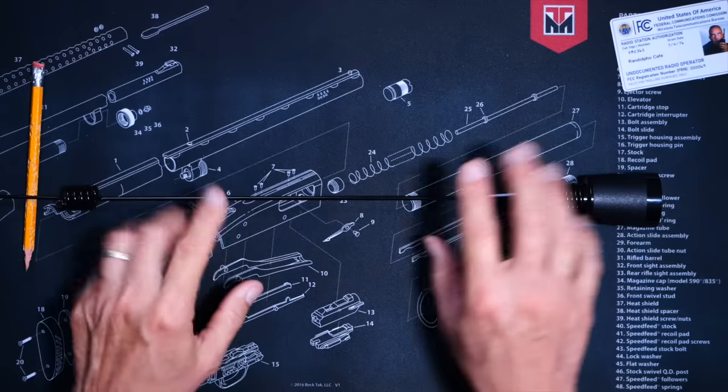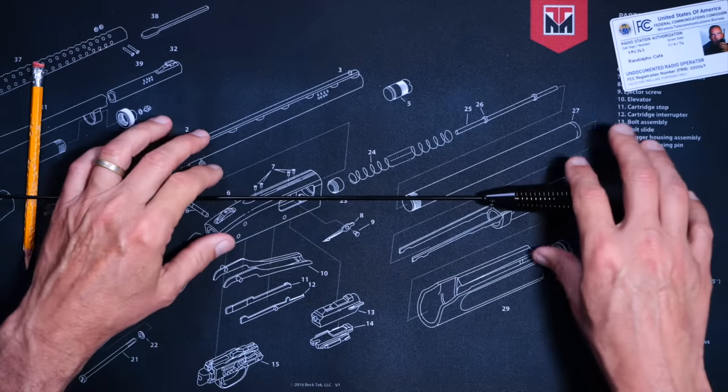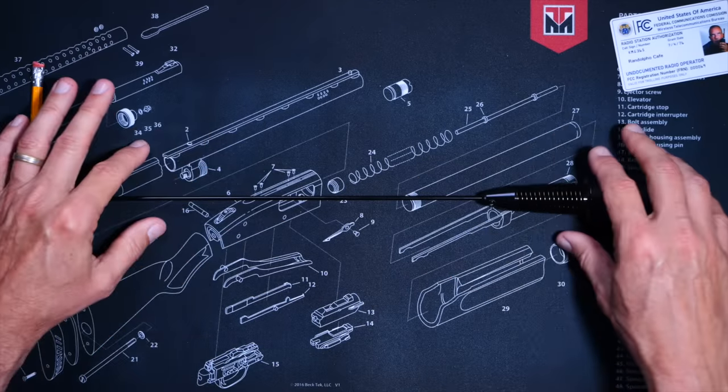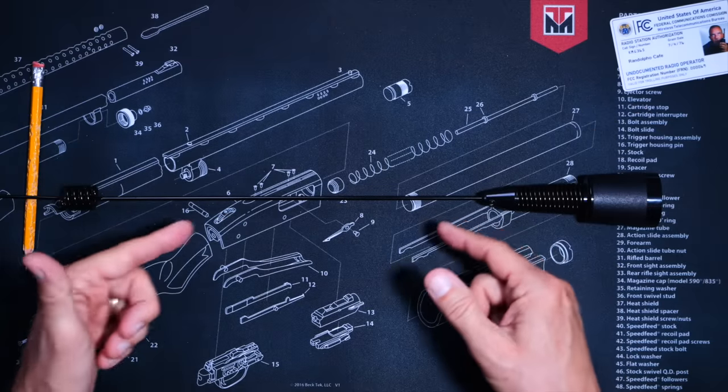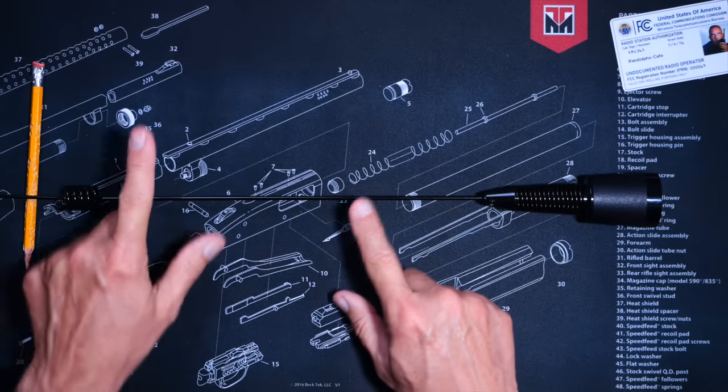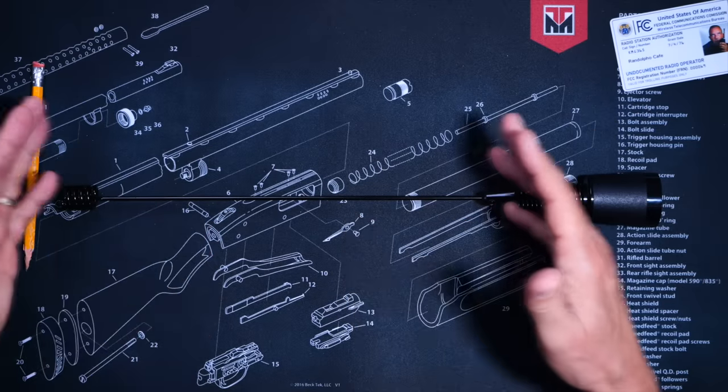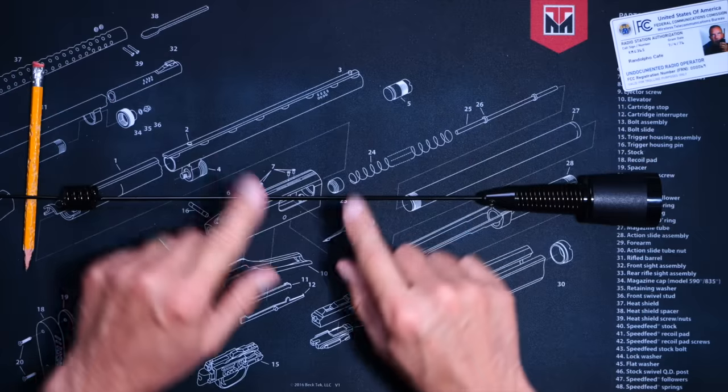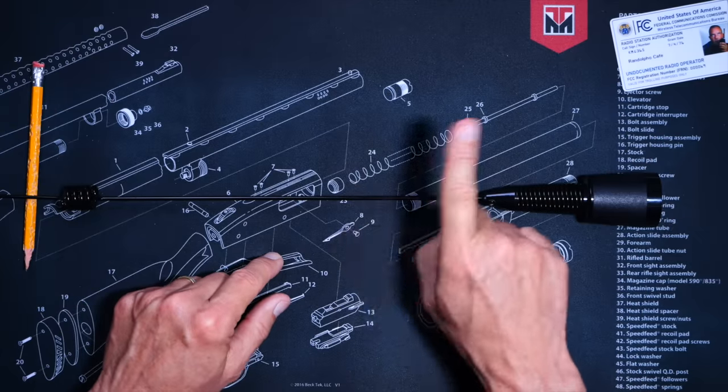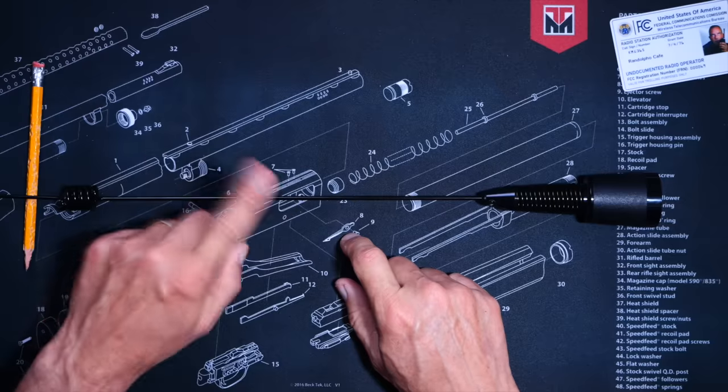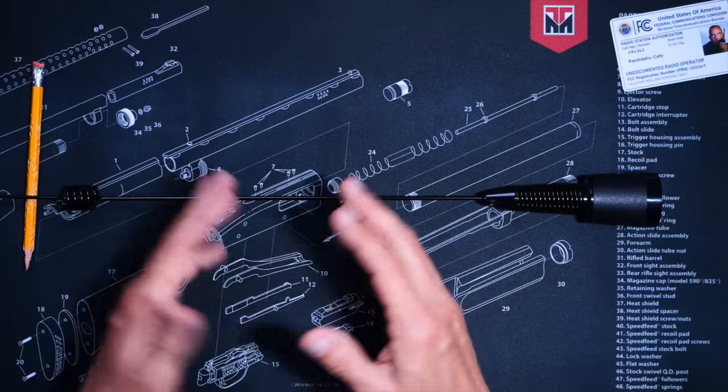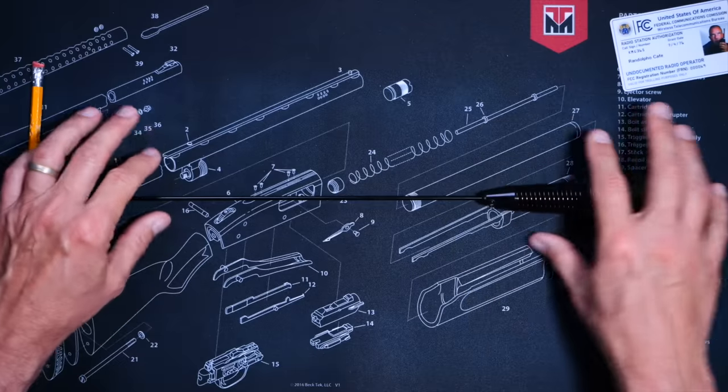And just to prevent any confusion, the Midland MXTA26 mobile GMRS antenna is compatible with any GMRS radio. You cannot use it with your CB radio and you cannot use it with your ham radio. Well, technically you could, but it would not perform very well.